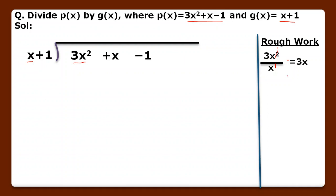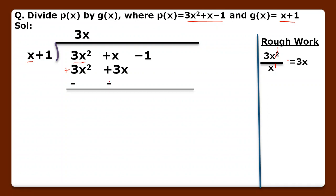The very first step: we divide the first term of the dividend by the first term of the divisor. The degree 2 is cut by degree 1, and we get 3x as our answer. We write 3x in the quotient part. Now we multiply 3x by x to get 3x², and 3x by 1 to get 3x. The signs of 3x² and 3x are both positive, so we change them to minus and minus.